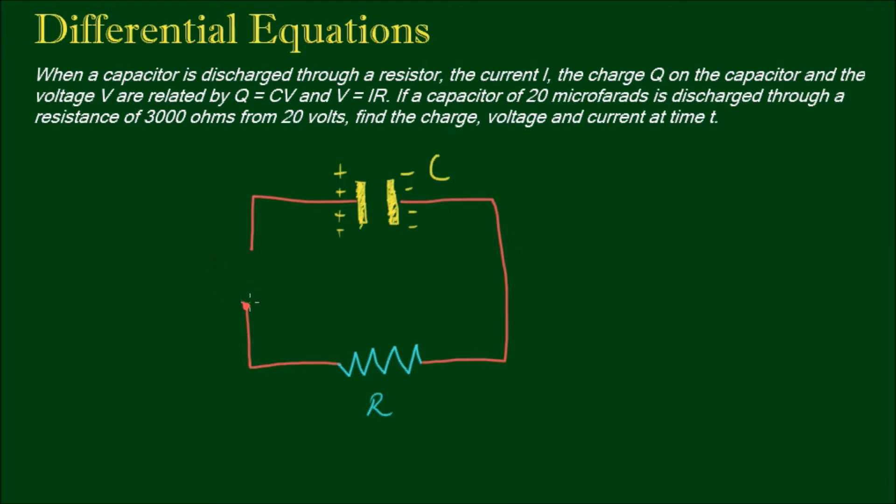Alright, so when we close the circuit, this capacitor has an initial voltage. And when we close the circuit, current is going to start flowing out of it in the anti-clockwise direction. At least we say that's conventional current, because conventional current goes from positive to negative.